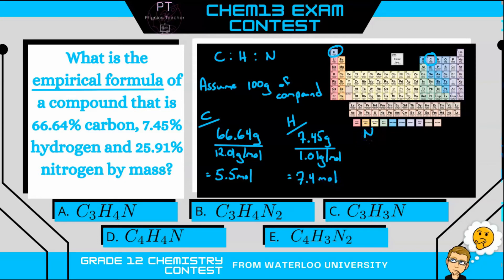And lastly, we'll do the same thing for nitrogen. Now for nitrogen we have 25.91, so that is 25.91 grams divided by its molar mass, which you get from your periodic table and which you are allowed on this contest, is 14.01 grams per mole, which gives us 1.85 moles.